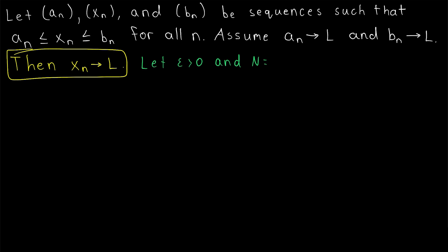We may think, since a_n eventually gets within epsilon of L and b_n eventually gets within epsilon of L and x_n is squeezed between them, it seems like x_n would be forced to also be within epsilon of L.